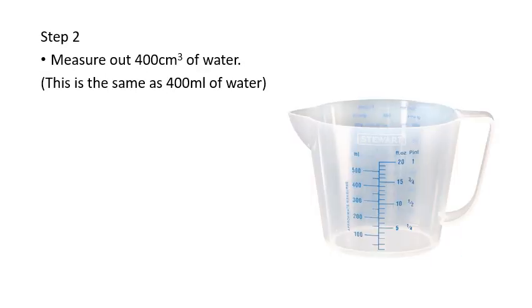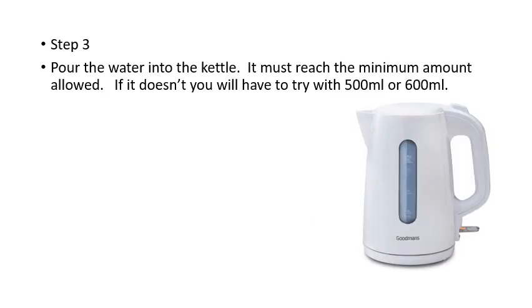You also need a measuring jug. Your first task is to measure out 400 centimeters cubed of water—that's the same as 400 milliliters. Put that into your kettle. Make sure it reaches the minimum amount allowed on your kettle. If it doesn't, you're going to need to use more water, so you'll need to change the volumes in your experiment.